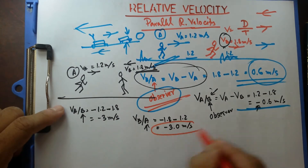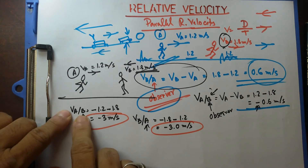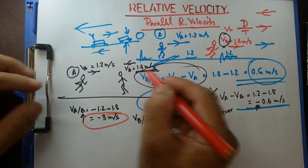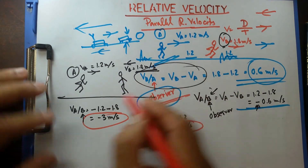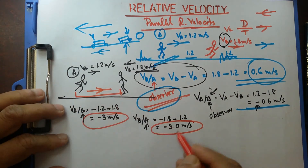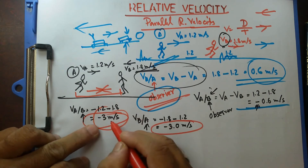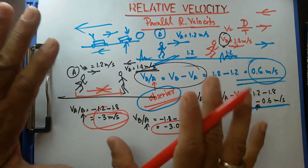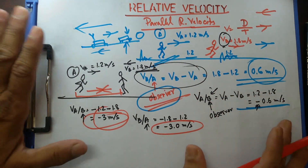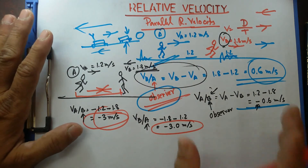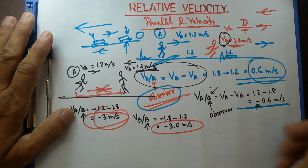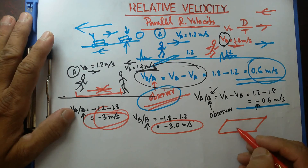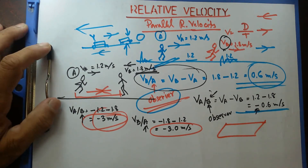Interesting — the velocity of A relative to B and the velocity of B relative to A are the same: negative 3.0 meters per second. This means that since they are moving in opposite directions, the distance between them is closing at 3 meters per second. In the next video, I'll talk about relative velocity on a walkway. See you then — take care, have a good day.